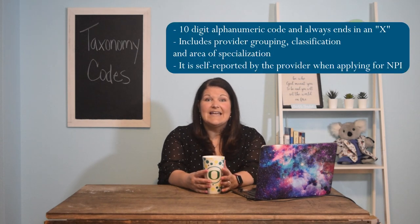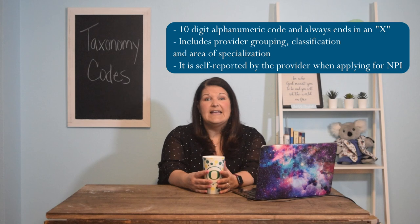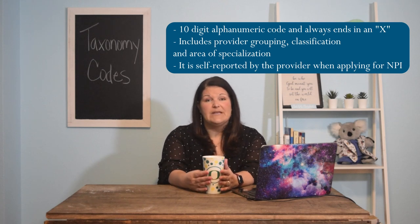A taxonomy code is a 10-digit alphanumeric code, and it ends with an X. It's broken into three parts. The first part is your provider grouping — that means it's going to be osteopathic versus allopathic versus physical therapy, whatever your grouping would be as a medical provider.